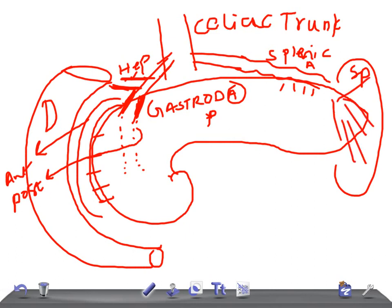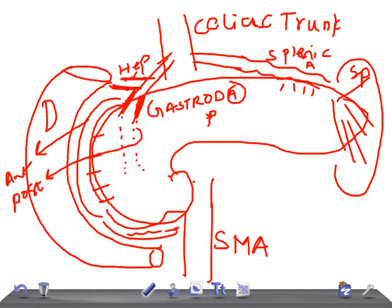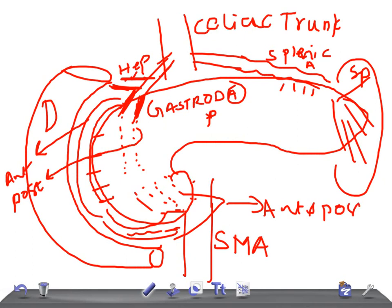Now let's talk about the superior mesenteric artery, which arises from below. From the superior mesenteric artery, a branch arises giving two divisions known as the anterior and posterior inferior pancreaticoduodenal arteries — abbreviated as IPDA.